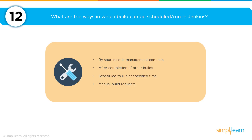What are the ways a build can be scheduled and run in Jenkins? There are four ways: first, when source code management commits new code into the repository; second, after the completion of other builds that your project depends on; third, by scheduling builds to run at a specified time, such as nightly builds illustrating changes in your solution; and fourth, manually triggering a build on request.